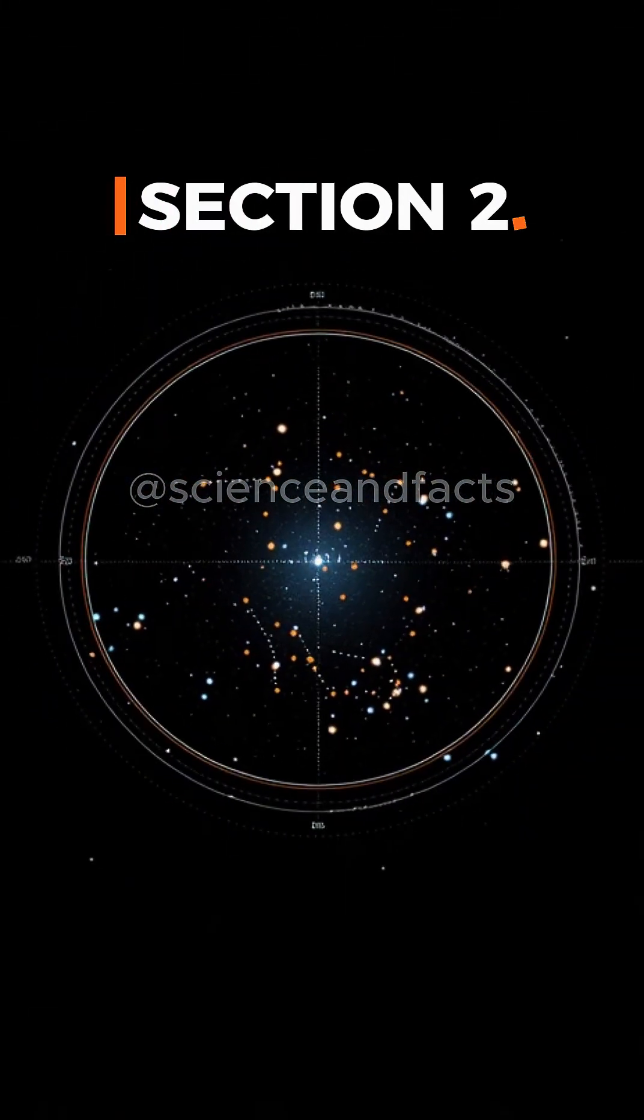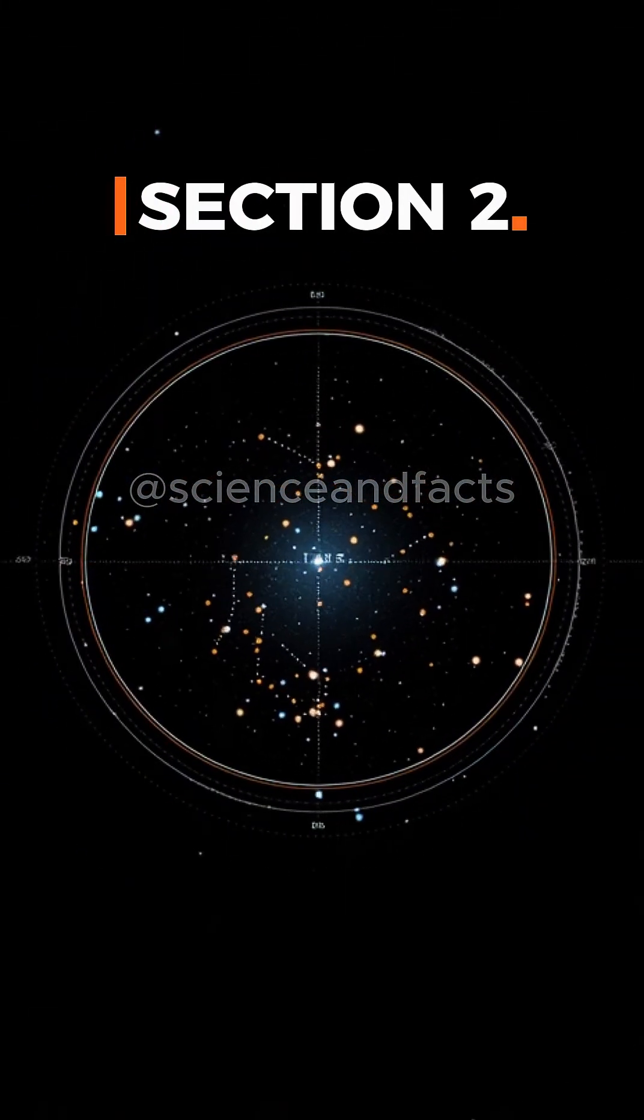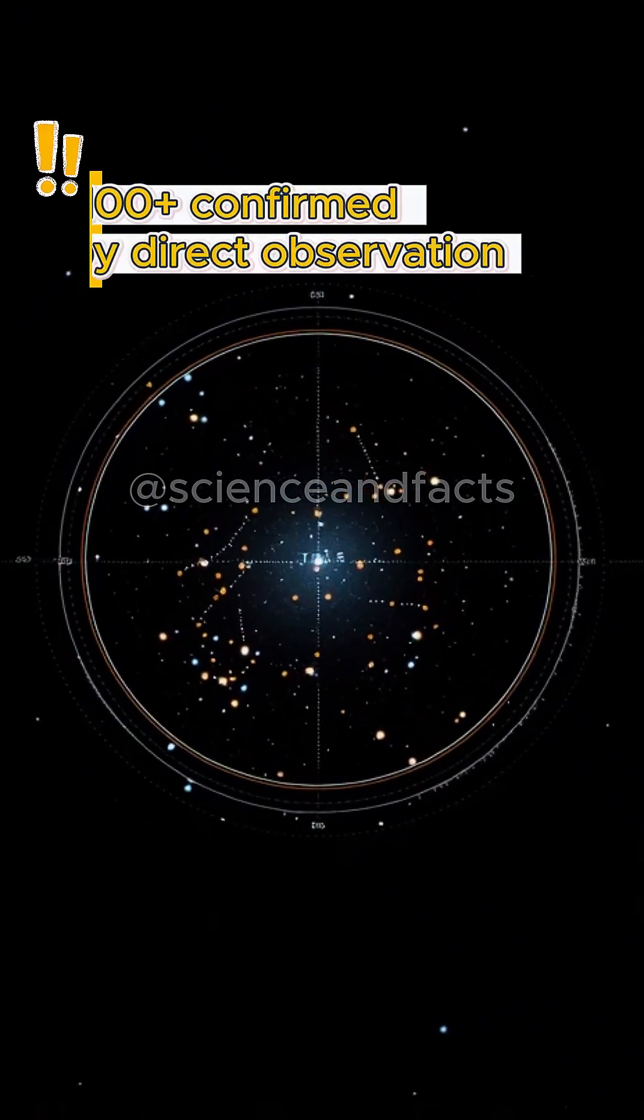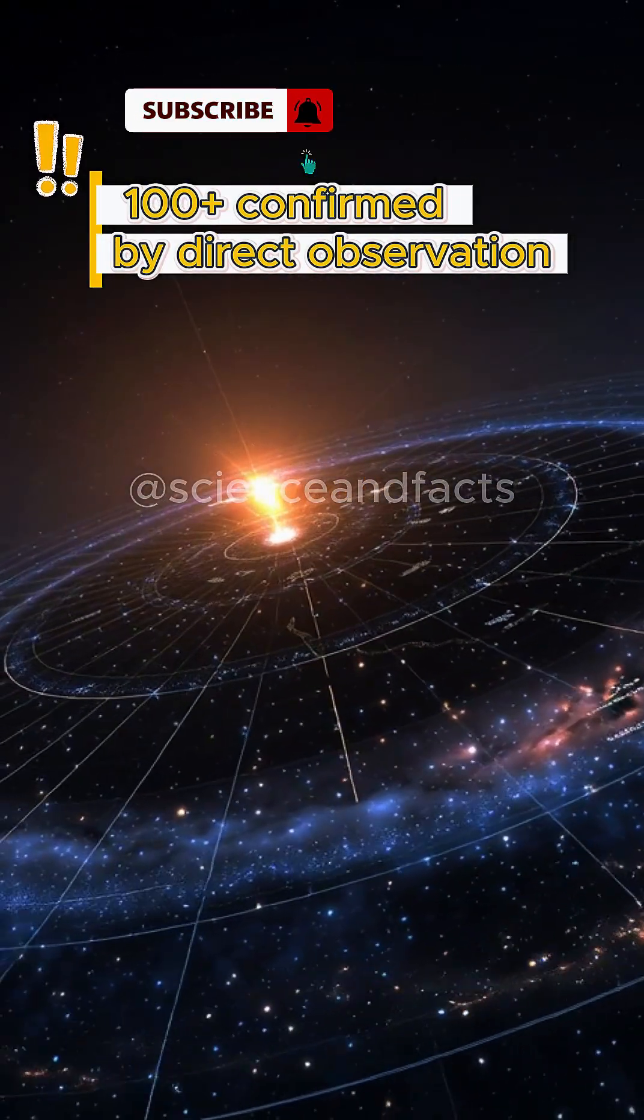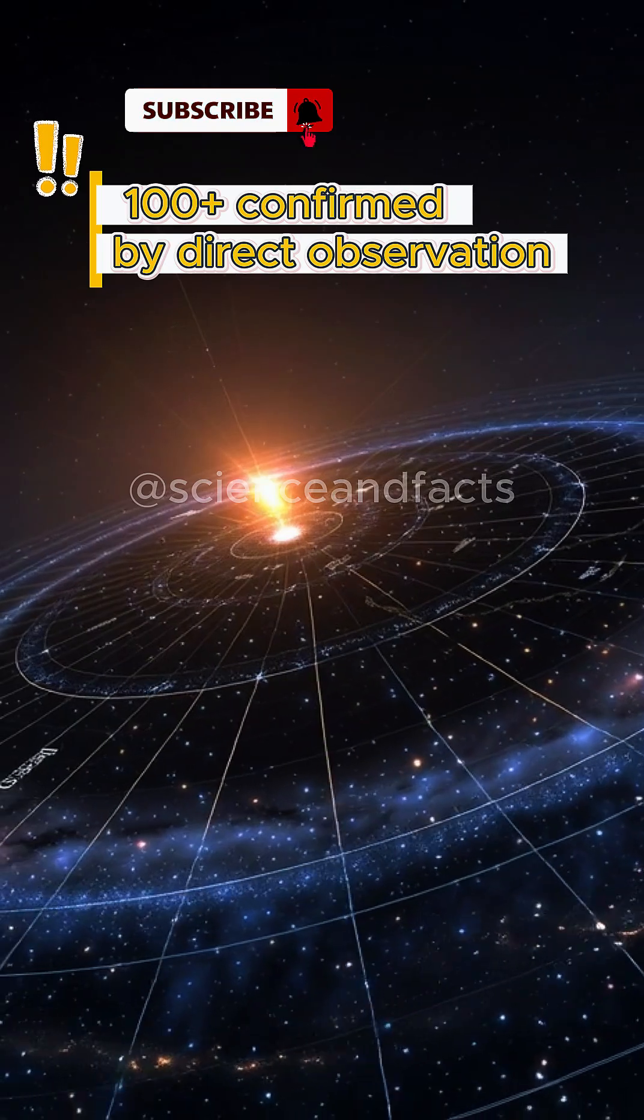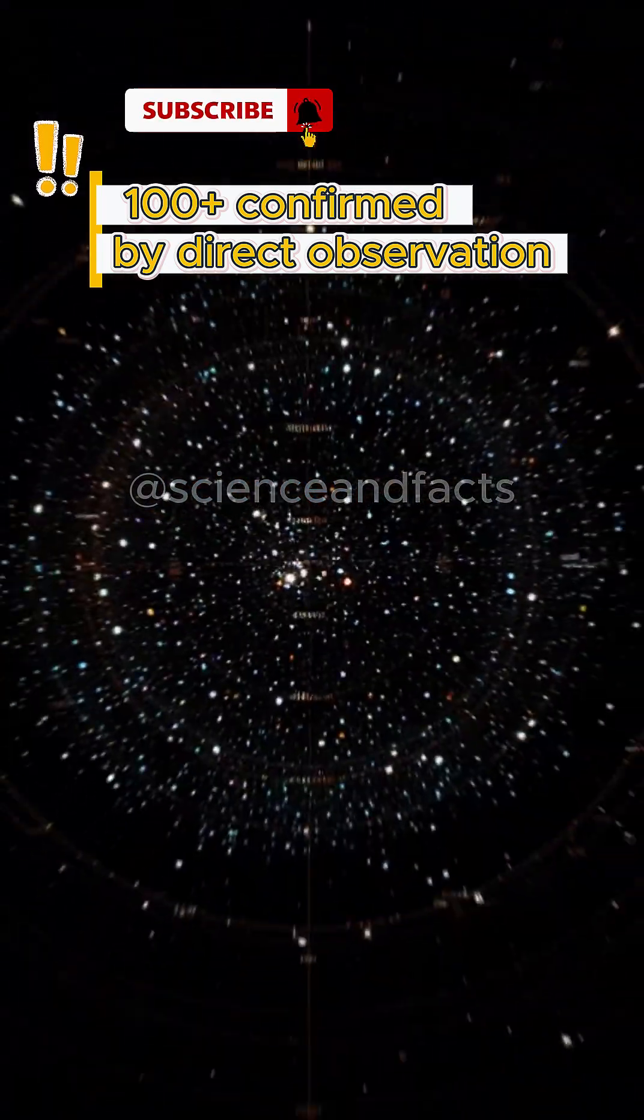How many black holes have been discovered? Roughly 100 plus confirmed by direct observation using gravitational waves, x-rays, and orbit tracking.